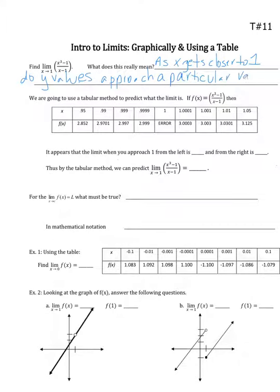Now when I say approach a particular value, it possibly could reach a particular value too. It doesn't mean it has to just get closer and closer — it could actually reach the particular value as well. So when x gets closer and closer to 1, do the y values of this function, if I drew that function, would the y values be getting closer and closer or approach a particular value? That's what it's asking.